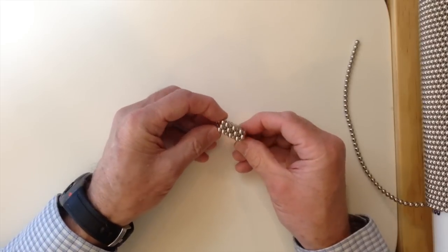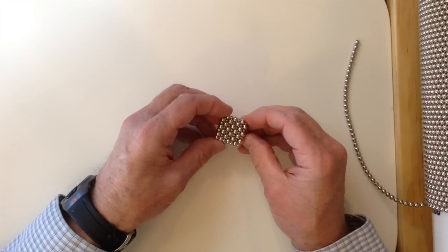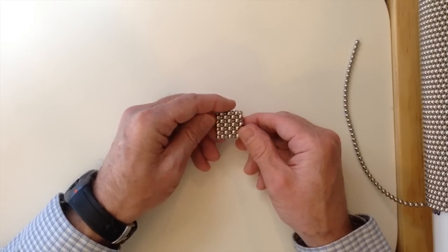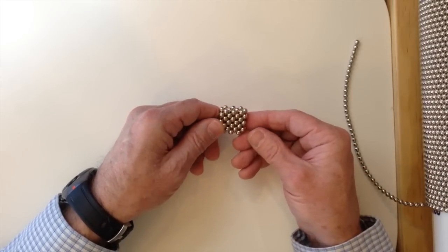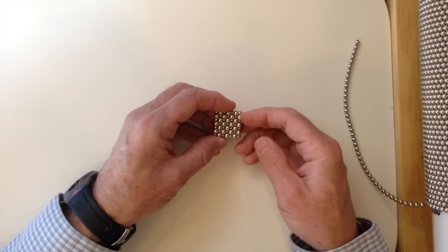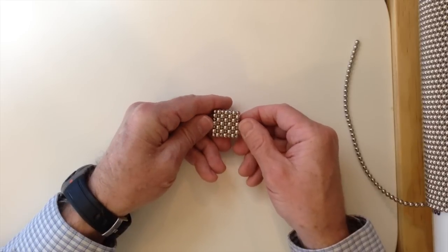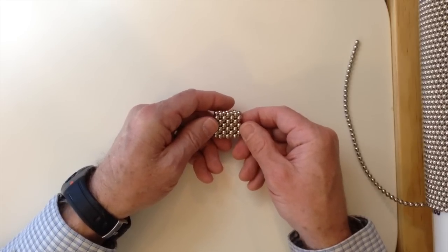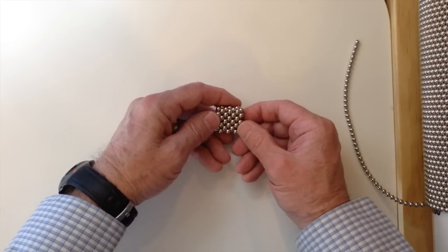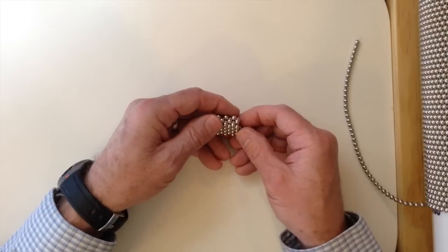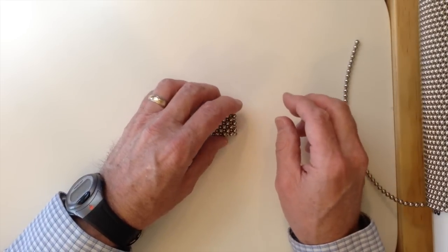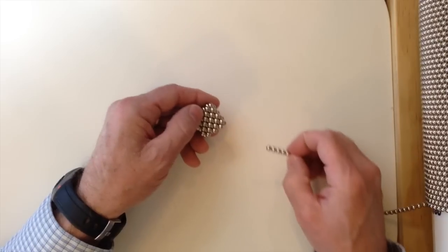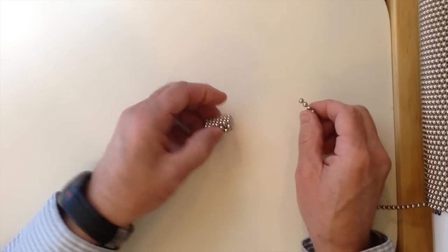Okay, we've just successfully added another layer to the outside of this structure. Again, the top looks the same as the bottom, but it's good to keep the top and the bottom identified because if you start working on the bottom and wrapping magnets around this way, the polarity is going to be wrong.